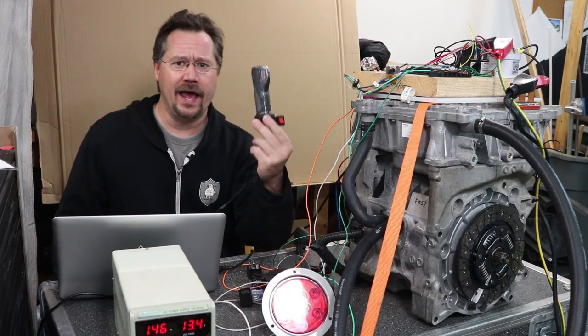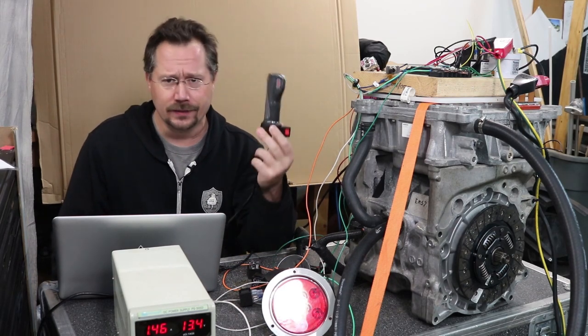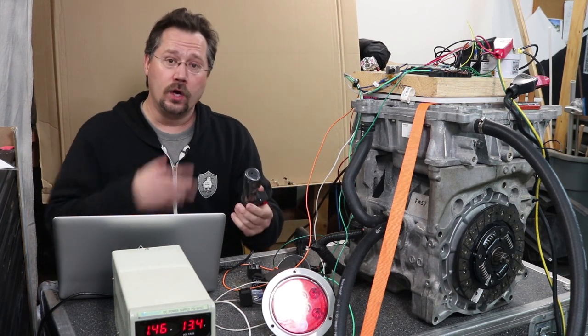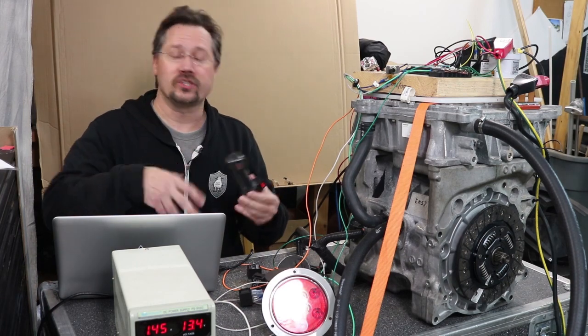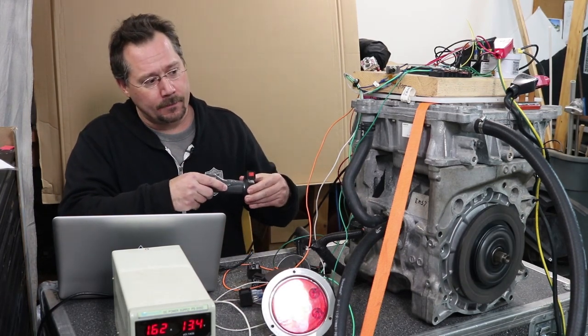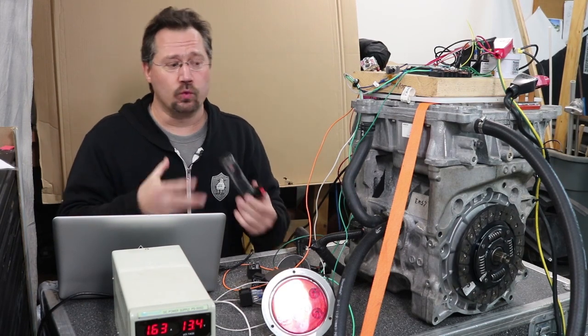And running into that, I've just got this little cheap hall effect scooter throttle. Works just fine for testing. And if I give it a spin right now, we'll spin up the rotor. And when I let go, it's going to slow down through regenerative braking. And you see it slows down relatively quick.